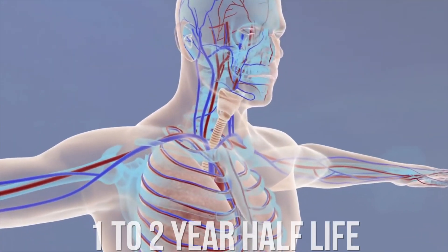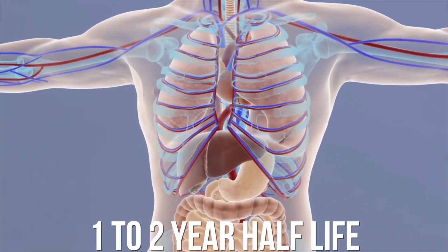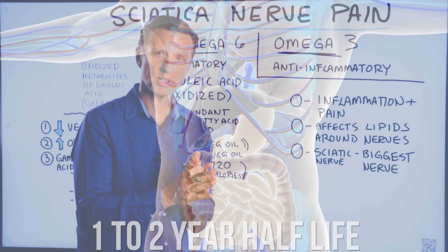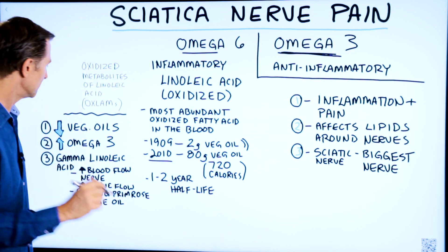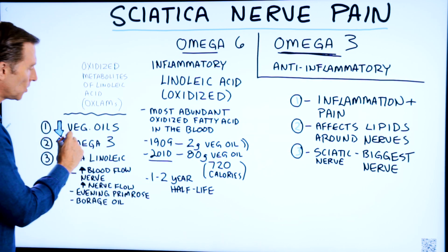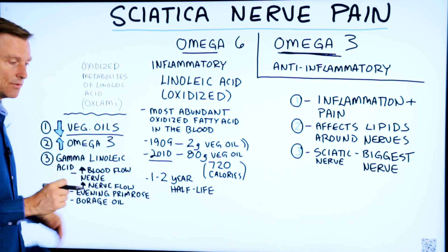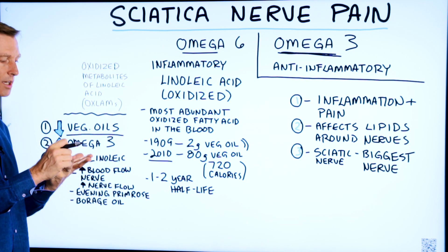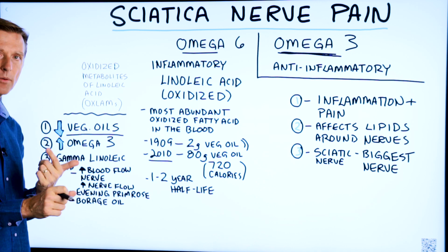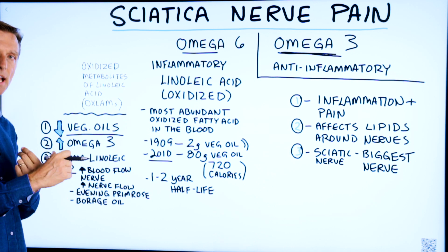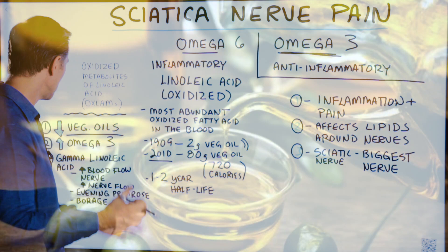It has a one-to-two-year half-life and doesn't break down very easily. This is what you need to do if you have sciatic nerve pain or any nerve pain: decrease the vegetable oils. Start to read labels. Avoid soy, canola, corn oil, cottonseed oil, and even safflower oil.